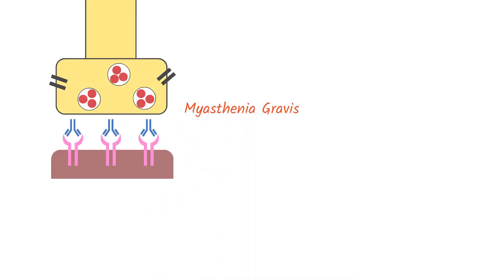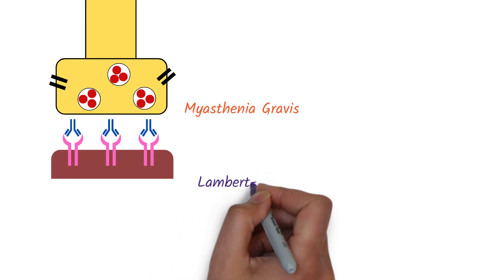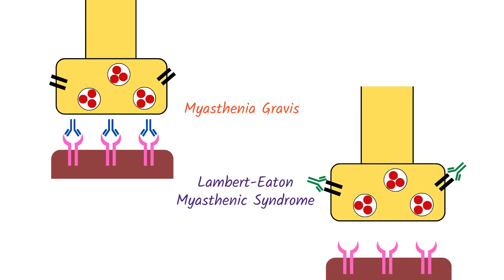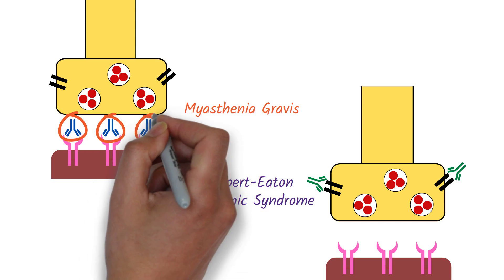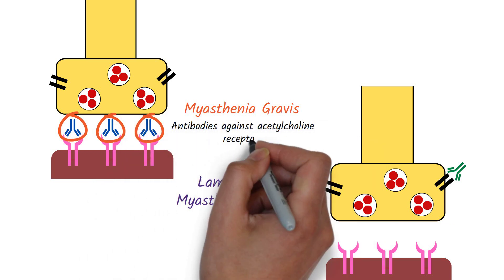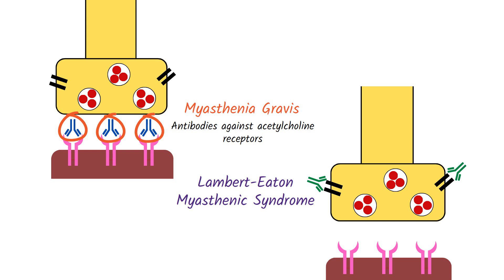Myasthenia Gravis produces antibodies against the post-synaptic membrane, while Lambert-Eaton Myasthenic Syndrome produces antibodies against the pre-synaptic membrane. The antibodies in Myasthenia Gravis bind to the acetylcholine receptors, preventing acetylcholine from binding to its receptors and triggering muscle contraction.